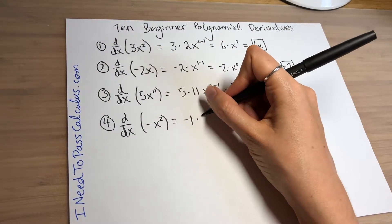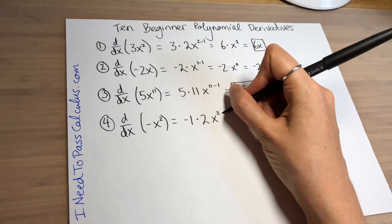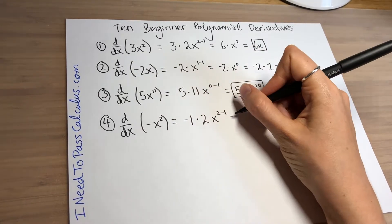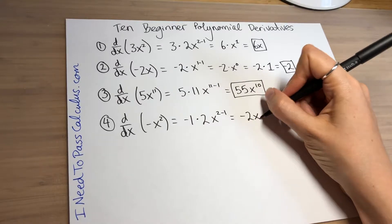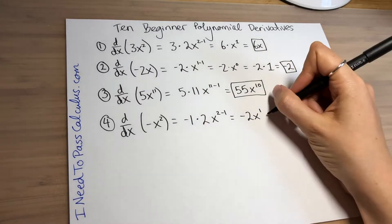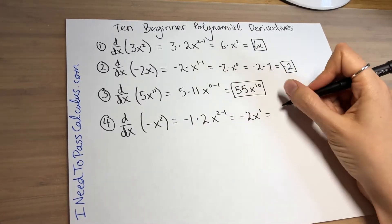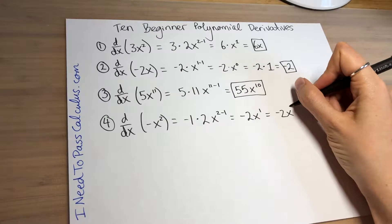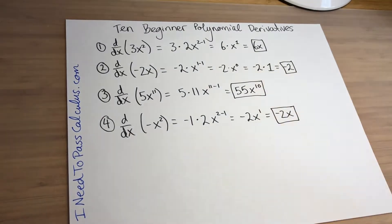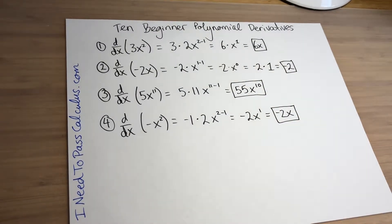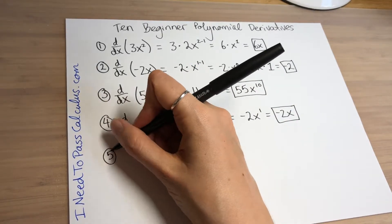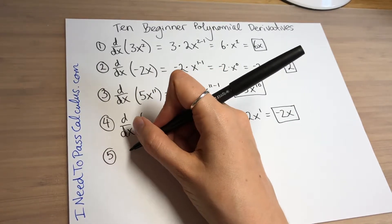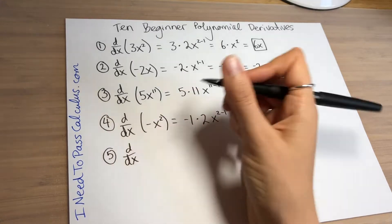On to problem number 4 — let's do d/dx of negative x squared. The negative out front is the same as negative 1. The 2 that was the exponent comes down to join the negative 1, giving negative 2 out front, and you subtract 1 from the exponent so the 2 becomes a 1. Your final answer is negative 2x.